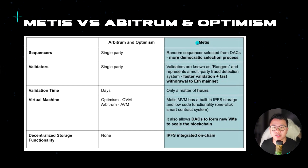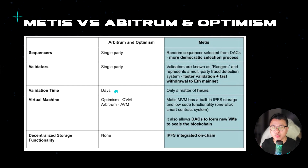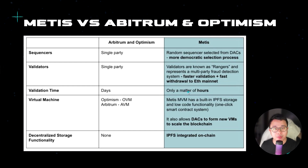MATIS from the start is already more decentralized in terms of their sequencing, which is basically the process of sending data back onto the main chain, which is Ethereum. They also have validators that allow for faster validation and faster withdrawal to the ETH mainnet. When withdrawing from Arbitrum and Optimism, it can require days if you're using the bridge. But for MATIS, if you want to withdraw, it only takes a couple of hours, which is a lot more user friendly.